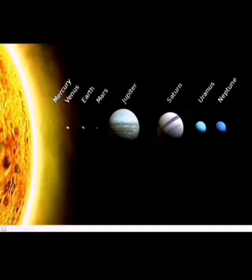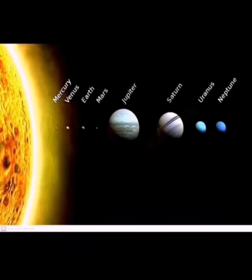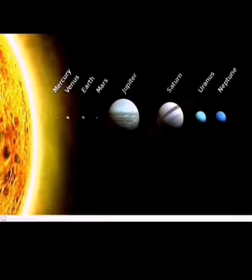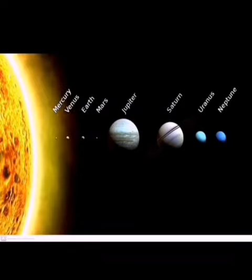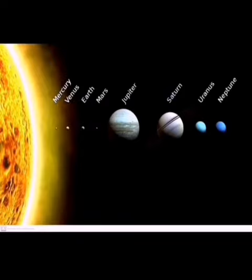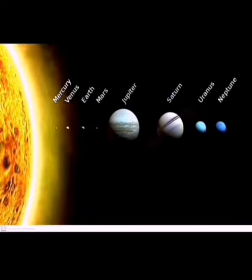Once again, we revise the planets name: Mercury, Venus, Earth, Mars, Jupiter, Saturn, Uranus, Neptune. In this video, we are going to learn about asteroid.